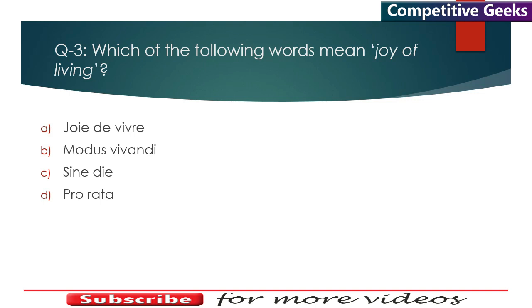Question 3: Which of the following words mean 'joy of living'? The answer is Joie de vivre. Please excuse my pronunciation of the French word. Modus vivendi means way of living. The difference between joy of living and way of living is important. Sine die means for an indefinite period. Pro rata means in proportion.